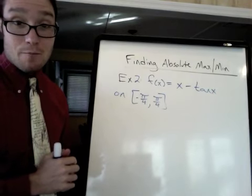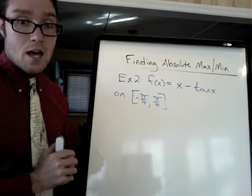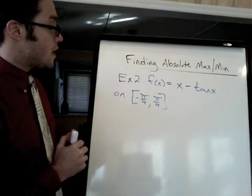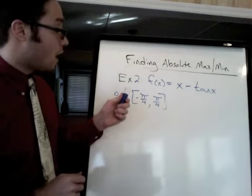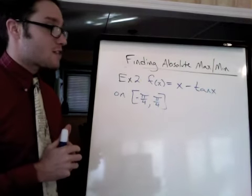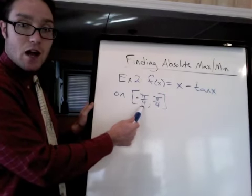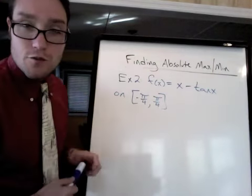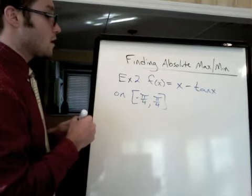All right, I'm back for another example. So here's a trig one. I want to find the absolute mins and maxes of f(x) equals x minus tan(x) on this closed interval, negative pi over 4 to pi over 4. Our good old friend 45 degrees. So, first derivative test.